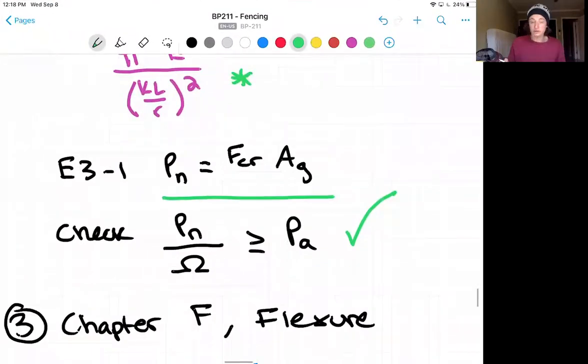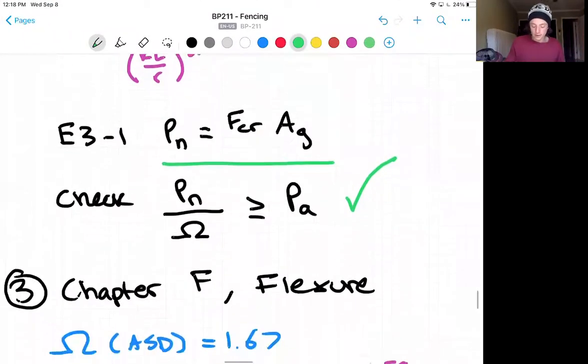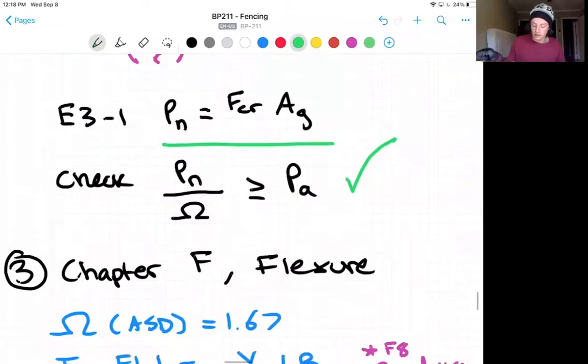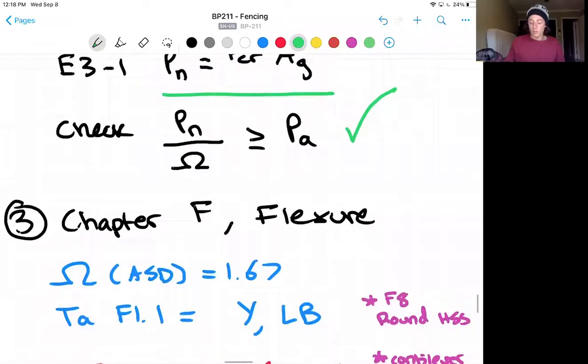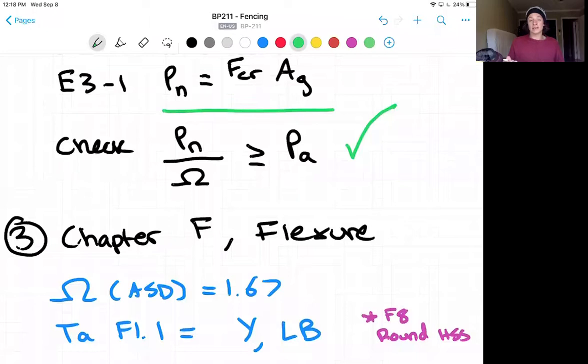Now moving on to chapter F, which is flexure, we'll go through a similar process with the same factor of safety. And table F1.1 tells us we need to check yielding and local buckling for F8 condition, which is a round HSS member.